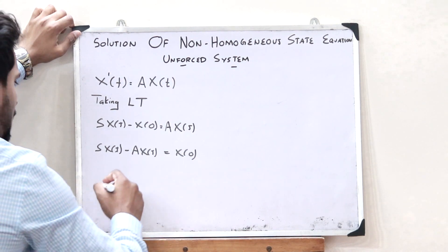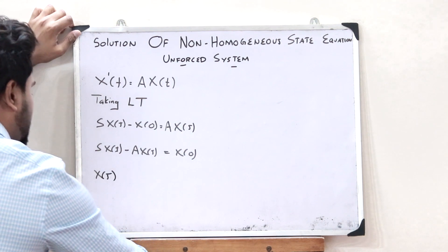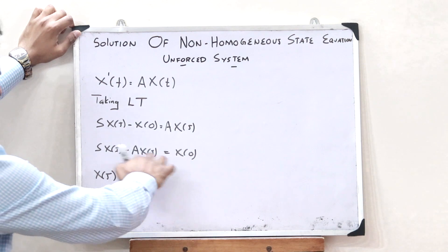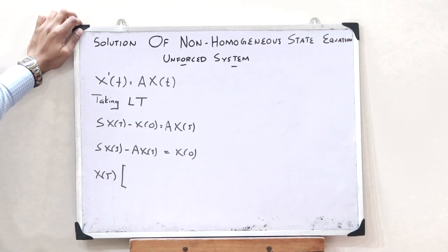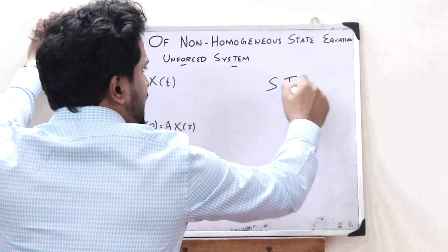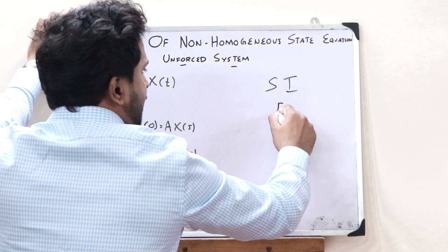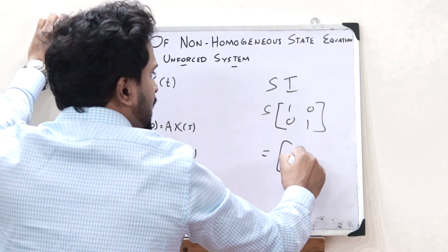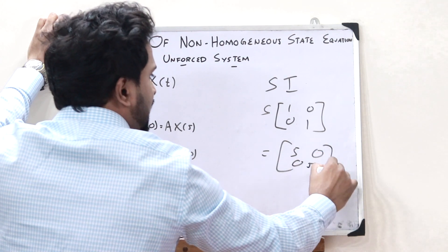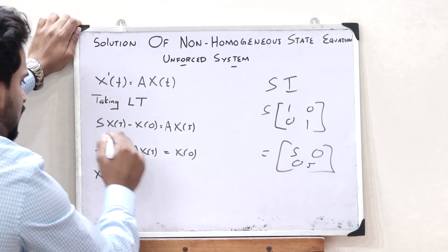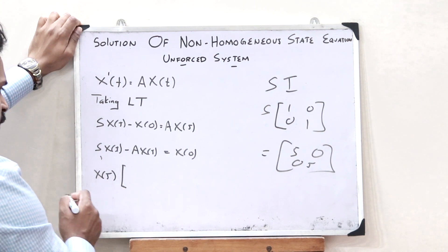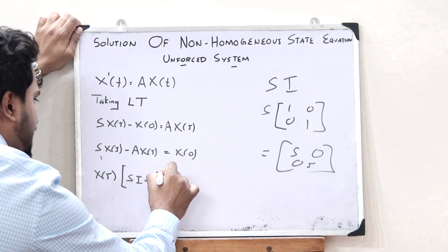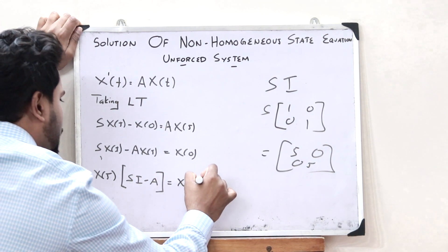So now let us take this particular term over here. Upon doing that, we would get s·X(s) minus A·X(s) is simply equal to x(0). So here, X(s) is common — we can take X(s) common outside. This is X(s) multiplied by... but here all these are in terms of matrices, so we cannot simply write s. We have to write s·I, where I is the identity matrix. So we would get X(s) into (sI − A) equal to x(0).